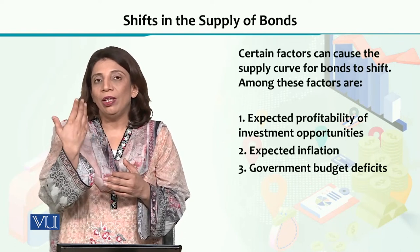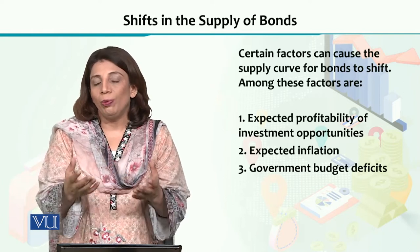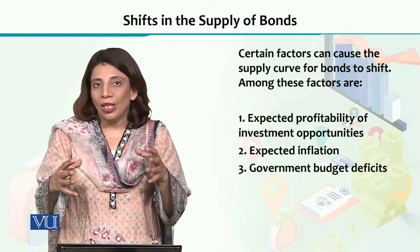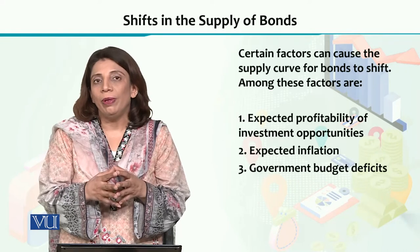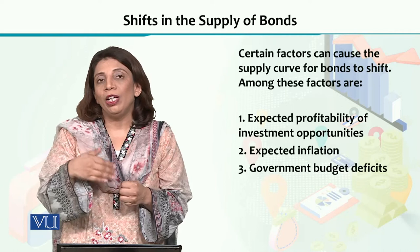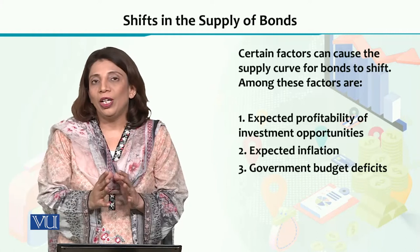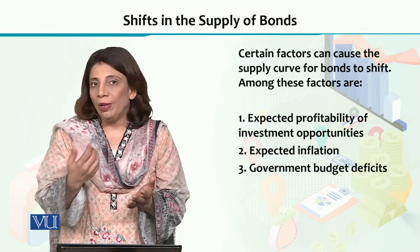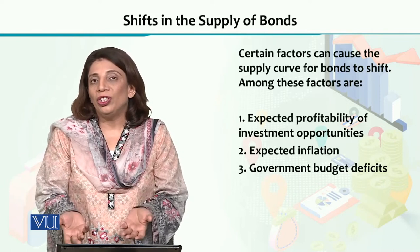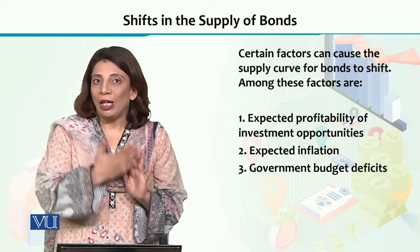Expected profitability — if you are seeing that it is going to increase, there would be an increase in the supply of bonds. Similarly, if you think there is some kind of contraction in the economy and profitability is very low and expected to go further down in the future, then it would not be a good idea to issue bonds to take money from the people for investment reasons, and you will shift the supply curve backward.